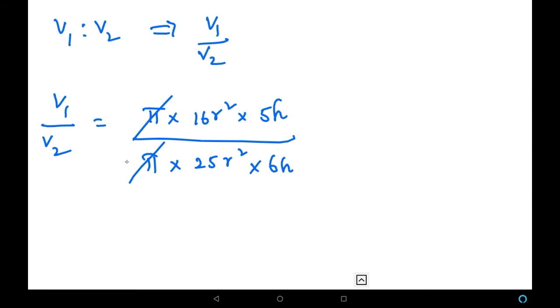Now, let us cancel a few things. This pi and this pi gets cancelled, and R squared and R squared gets cancelled, and H and H gets cancelled. Now we are going to cancel the constants, that is numbers, 16 into 5 into 6.